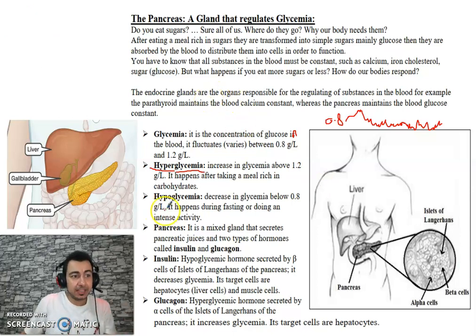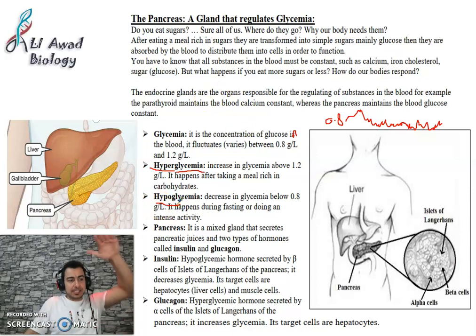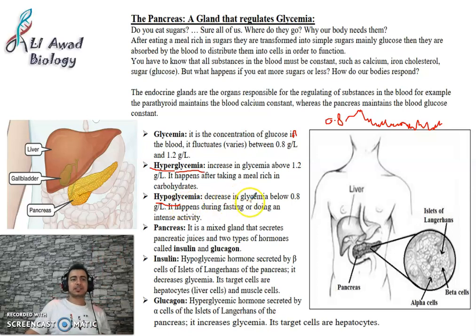Hypoglycemia — 'hypo' means low — means blood glucose drops below 0.8 g/L. This can happen during fasting or intense physical activity.